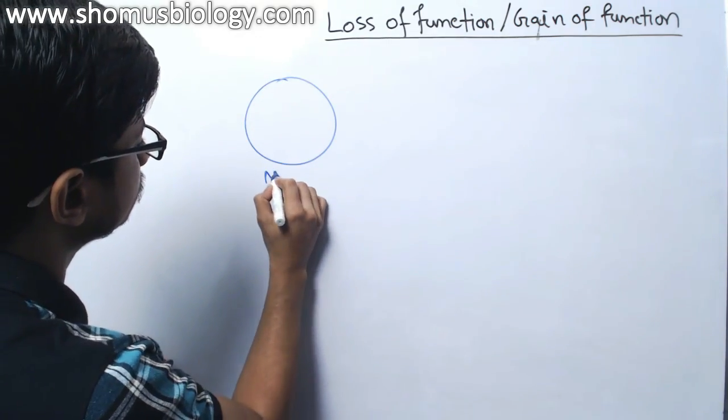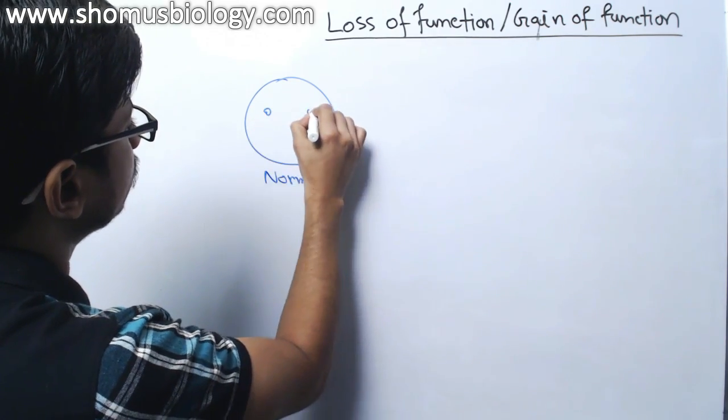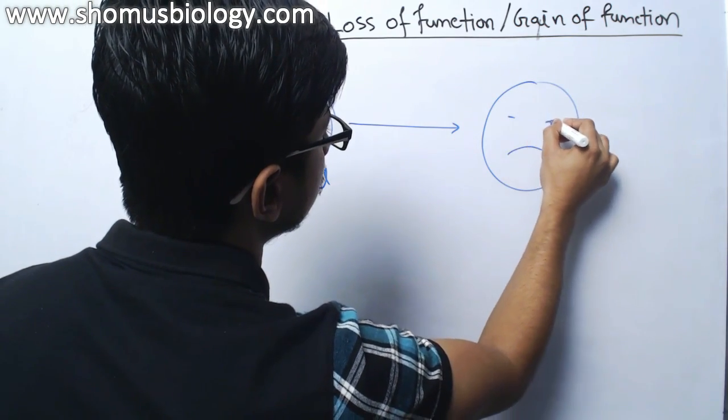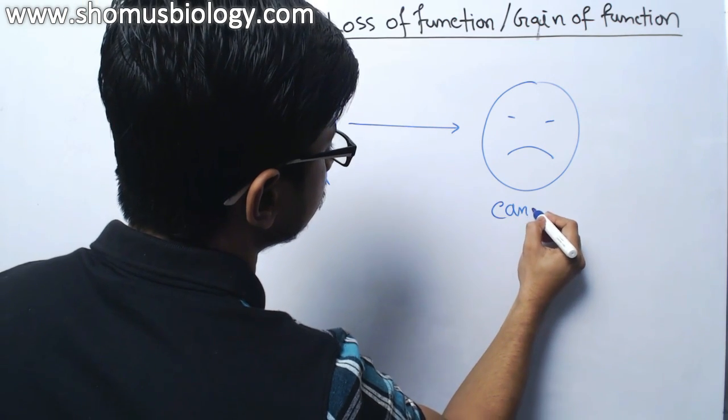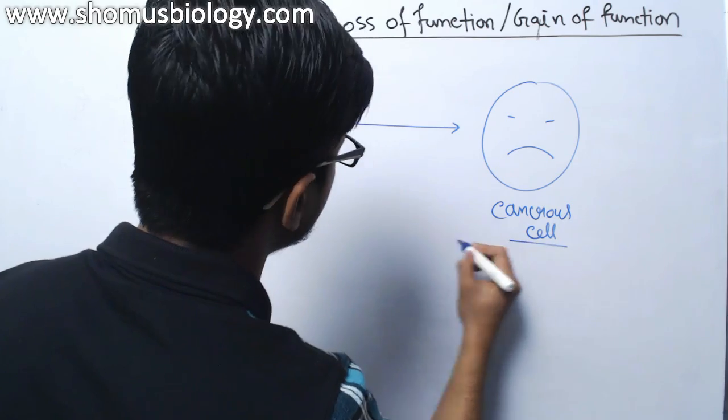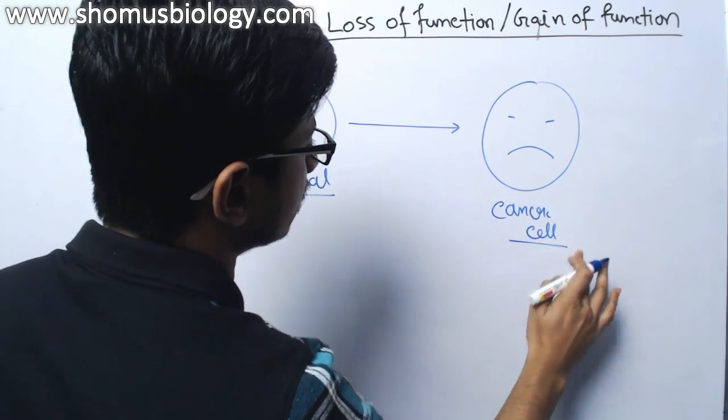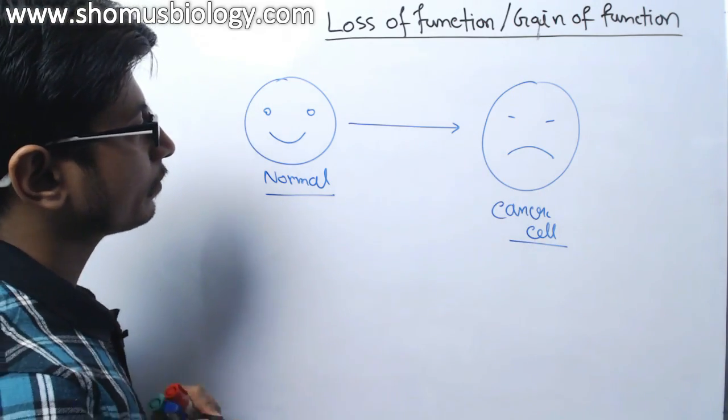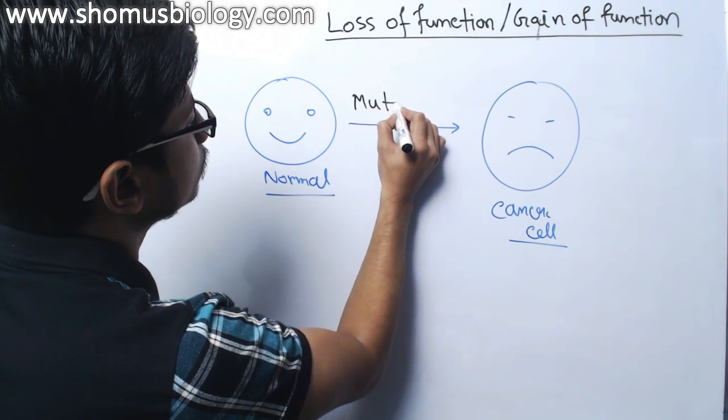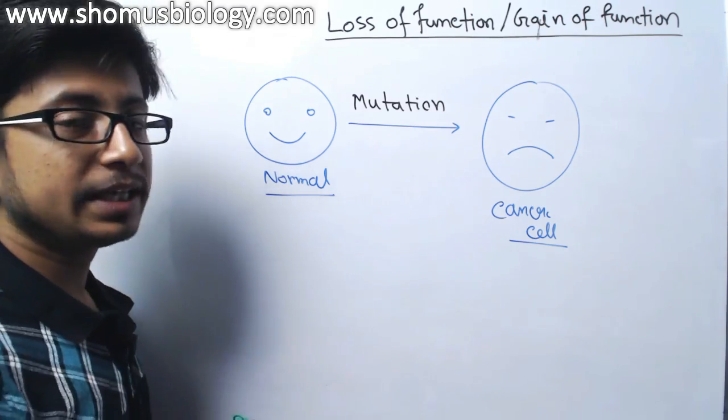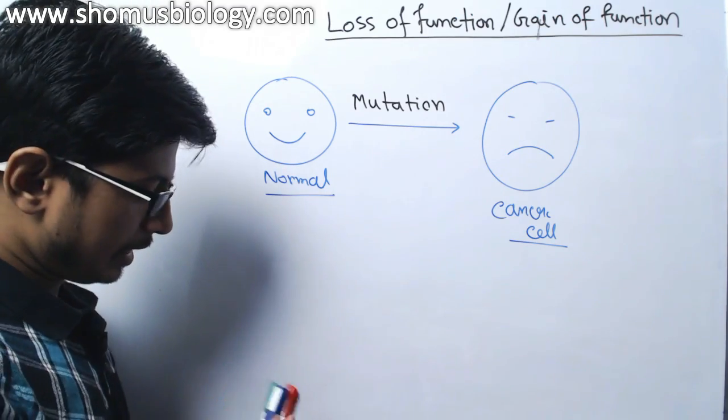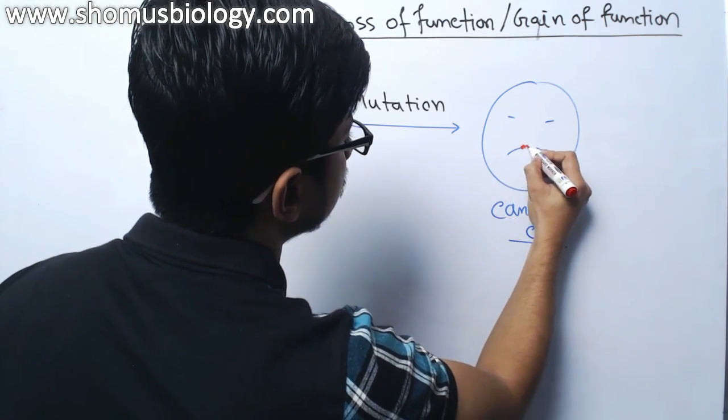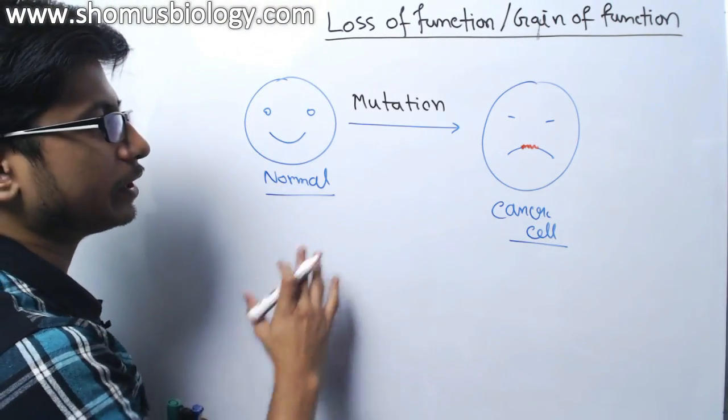We have a normal cell, a healthy normal cell smiling, that will be converted into a very sad cell because it is cancerous. So you can say normal cell into cancer cell. This is the conversion that we are interested in, and this conversion is caused by mutation - different types of mutation in the gene of a normal cell. The gene of a normal cell is modified. Due to this modification, normal cell converted into cancer cell.